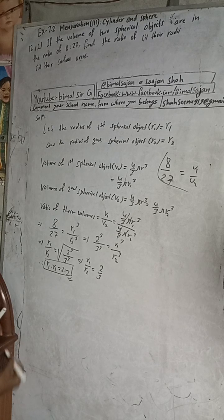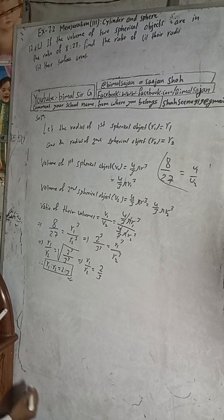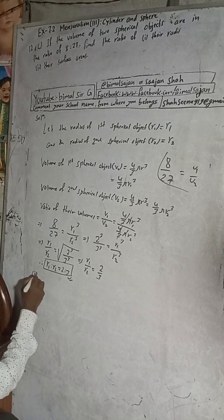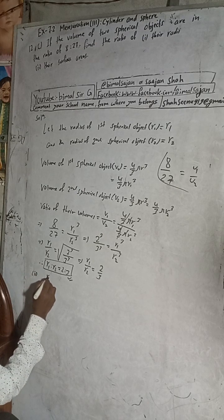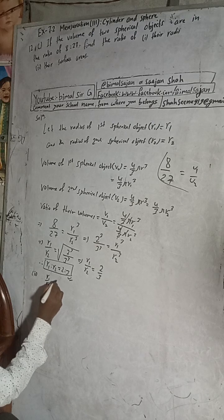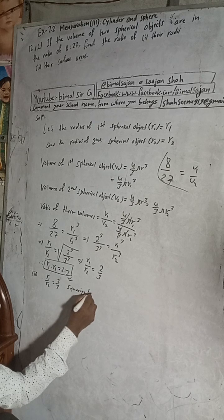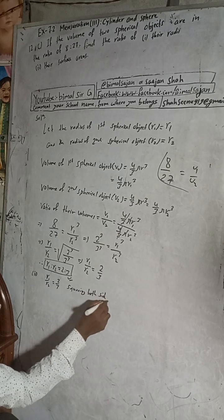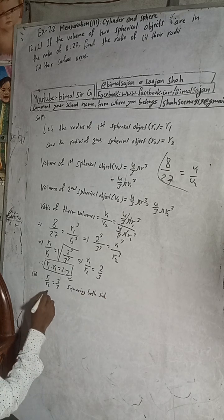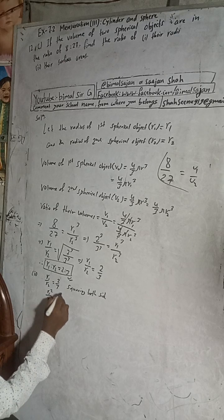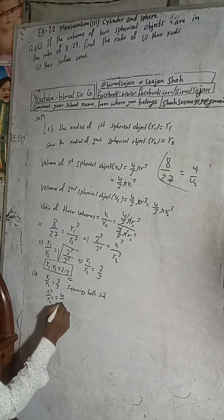Now for the surface area — what is the ratio of the surface area? Let's look at the second part. R1 by R2 is equal to 2 by 3. Squaring both sides, R1 whole square by R2 whole square is equal to 2 squared by 3 squared, which is 4 by 9.